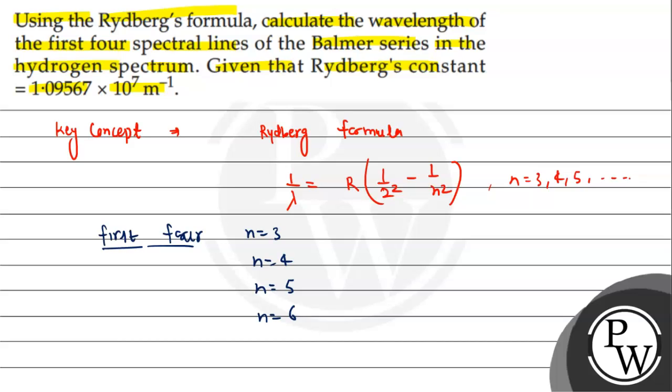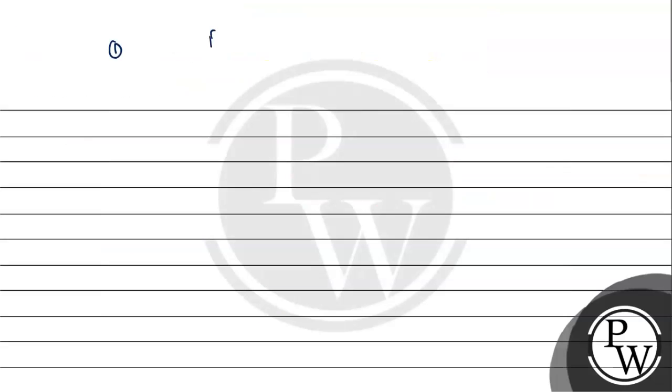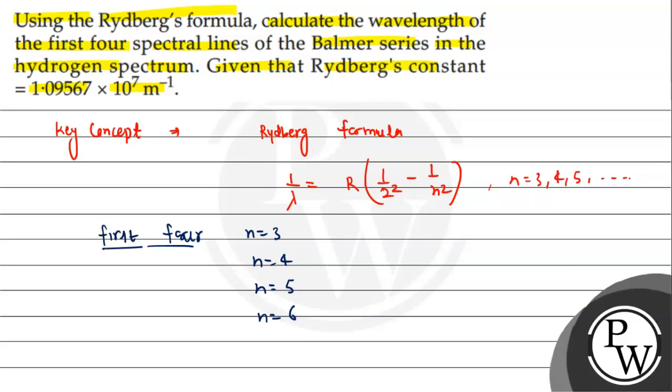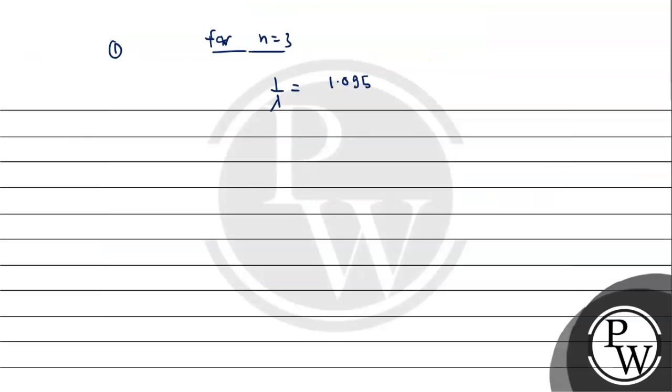For N equals 3: one upon lambda equals 1.09567 into 10 to the power 7, times one upon 2 square, which is one upon 4, minus one upon 3 square, which is one upon 9. We will solve it. One upon lambda equals 1.09567 into 10 to the power 7, and then it will be 36 in the denominator, and then 9 minus 4.